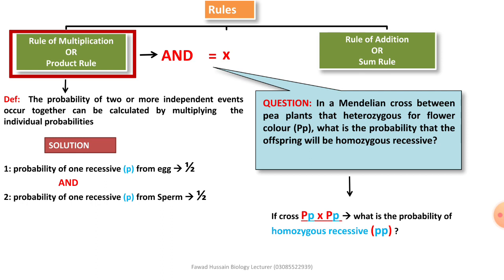यहाँ पर 'and' का word आया। 'And' आए तो आपके mind में product rule आना चाहिए। हमको two blue P चाहिए — एक egg से दूसरा sperm से — तो दोनों का contribution half-half है। एक का भी half और sperm का भी half। अब 'and' आया है solution में, तो 'and' indicate करता है product rule को। इसके solution में: one over two AND one over two equal to one over four.